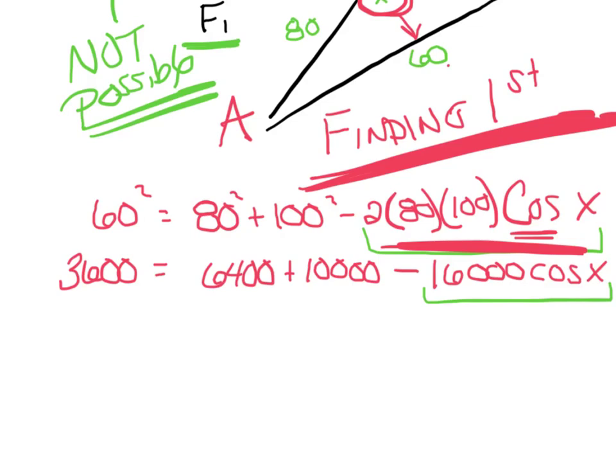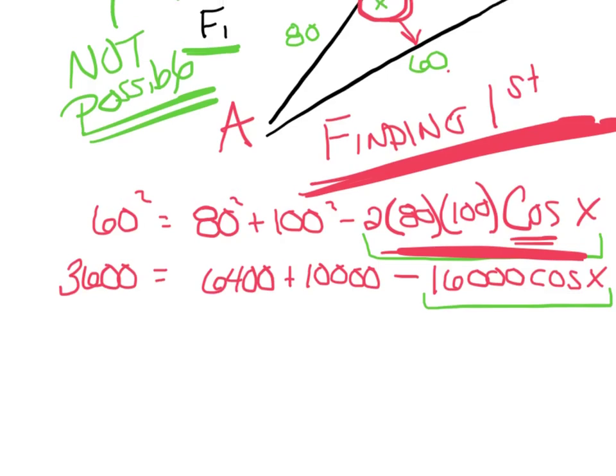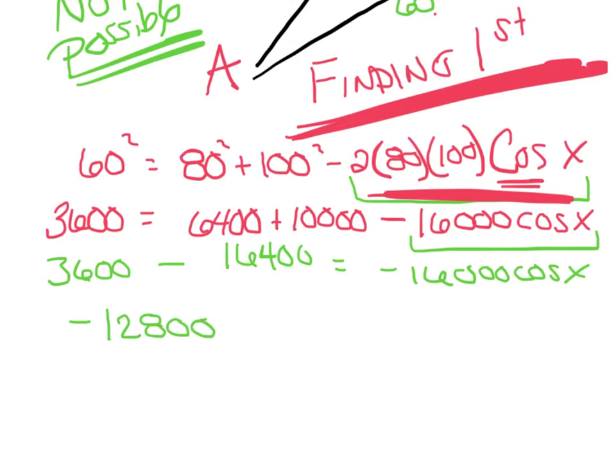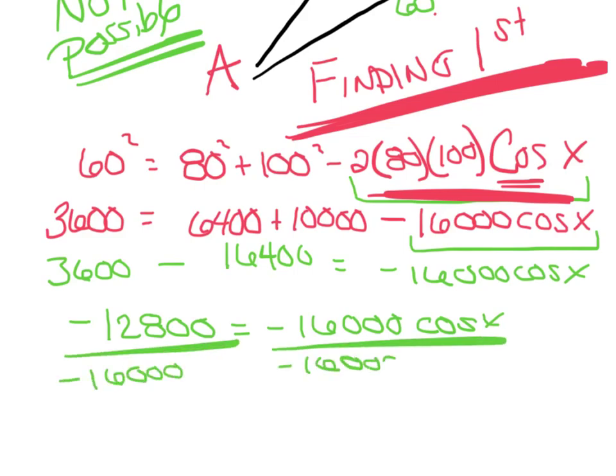I can add these two pieces and subtract them over. So I can add that in my head there and get 16,400. And so I'm going to take my 3600 and subtract that 16,400. That leaves me with negative 12,800 equals negative 16,000 cosine x. So divide both sides by that negative 16,000. And I've got .8 equals cosine x.